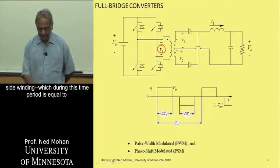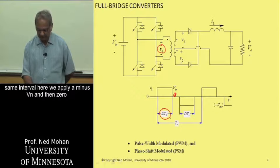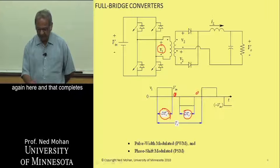which during this time period is equal to VN. And then it goes to zero. And then we, for the same interval here, we apply a minus VN and then zero again here.